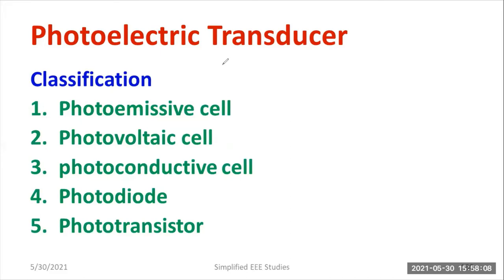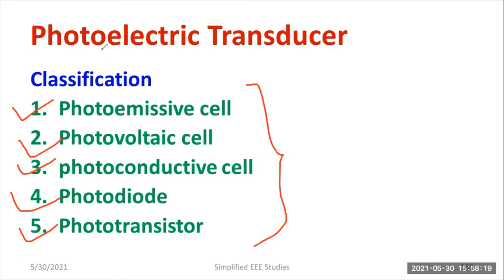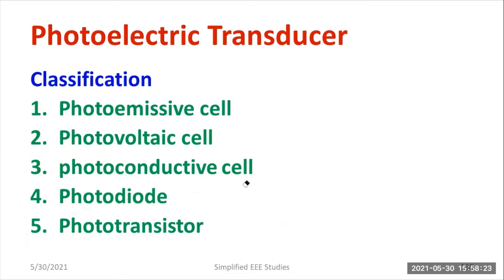How do you classify photoelectric transducers? It can be classified as: photoemissive cell, photovoltaic cell, photoconductive cell, photo diode, and finally photo transistor. This is the taxonomy or classification of photoelectric transducers. Let us have an individual discussion.